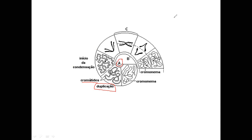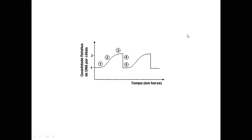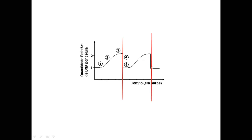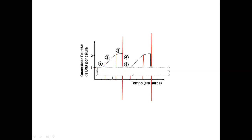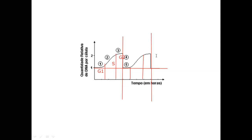Aqui é o gráfico: quando caiu o material genético, a célula já se dividiu e voltou à quantidade normal. Então: intervalo 1 é o G1 (repouso), intervalo 2 é o S (aumentou), intervalo 3 é o G2 (manteve), e então a célula se divide. Aqui nesse outro gráfico, de 0 a 2 é o G1; de 2 a 6 é o S — a quantidade de DNA foi de 6 para 12, duplicou; de 6 a 8 é o G2. A intérfase é o período no qual a célula vai duplicar o material genético antes de sofrer a divisão celular.